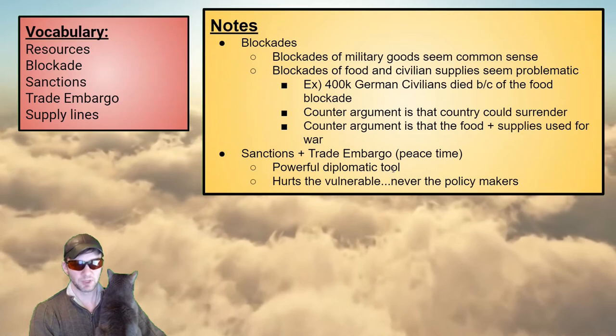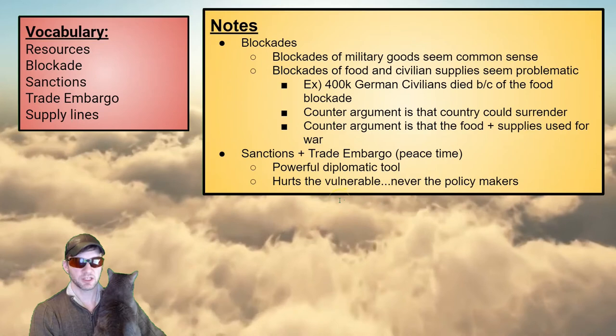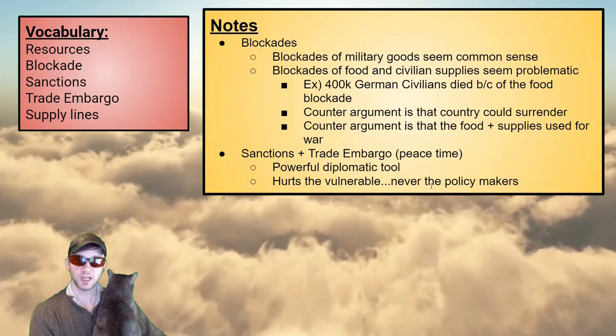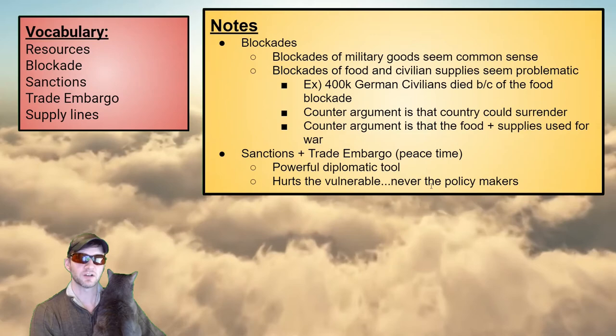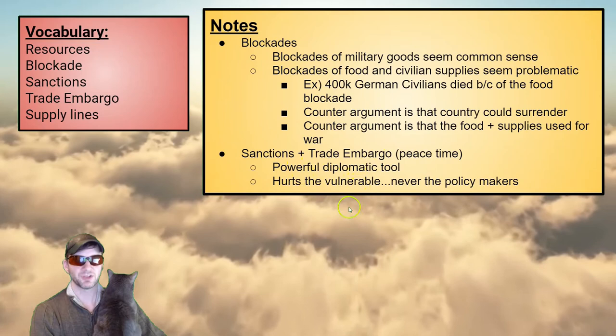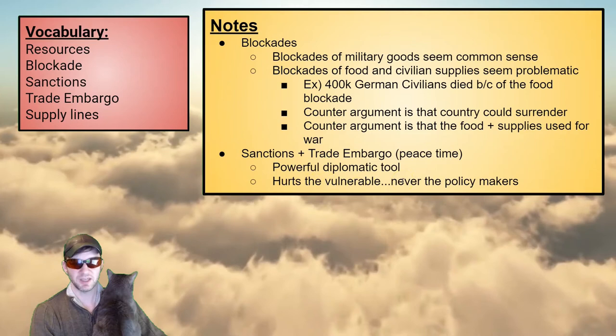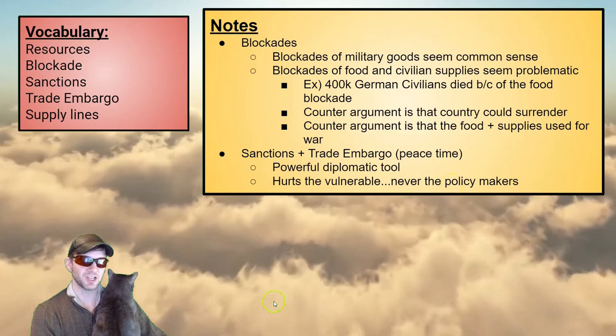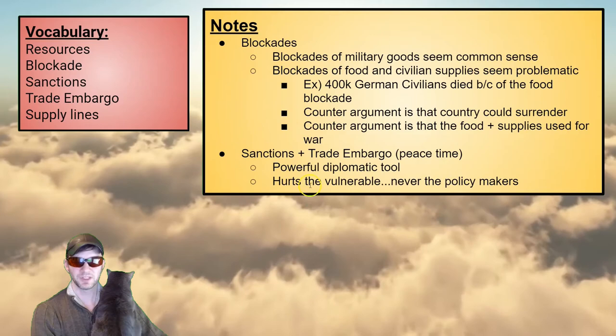The problem is that sanctions hurt the economy and always hurt the most vulnerable. Government officials are never the ones who go hungry — they keep themselves rich while the poor sacrifice. Sanctions and trade embargoes are very powerful, but they cause pain to the most vulnerable — the old, the young, the civilians — never the actual policymakers. It's a problematic policy with pluses and negatives.